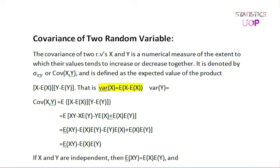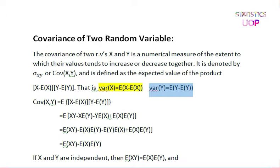The variance of Y is equal to the expected value of Y minus the expected value of Y squared — that is our mean. The variance is different for X and different for Y. Covariance is where you have more than one variable — two variables — and that is why the variance concept extends to covariance.